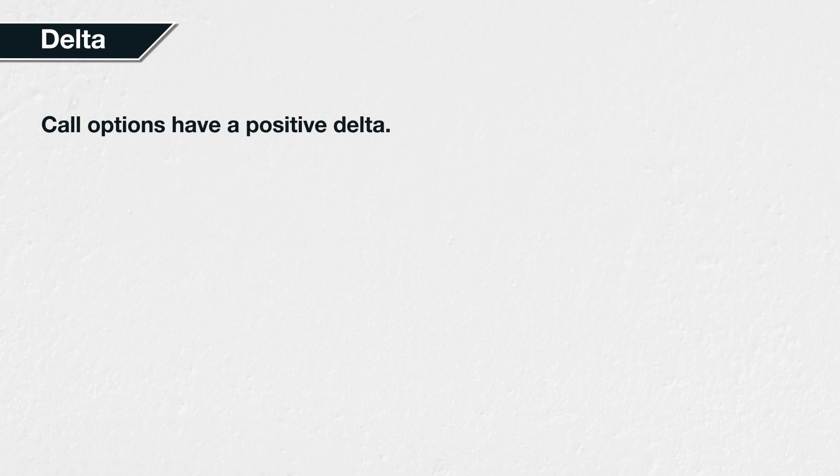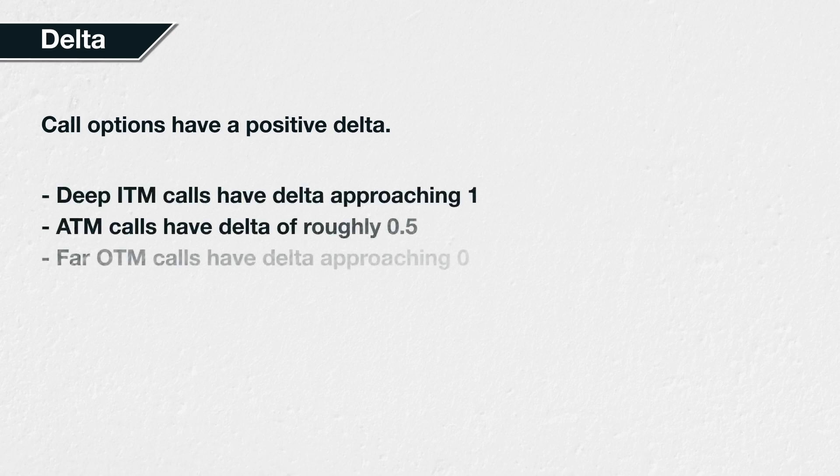Call options have a positive delta, because all other things being equal, an increase in the underlying price will make all call options more valuable. Call options have deltas between 0 and 1, with deep-in-the-money calls having delta approaching 1, at-the-money calls having delta of roughly 0.5, and far-out-of-the-money calls having delta approaching 0.